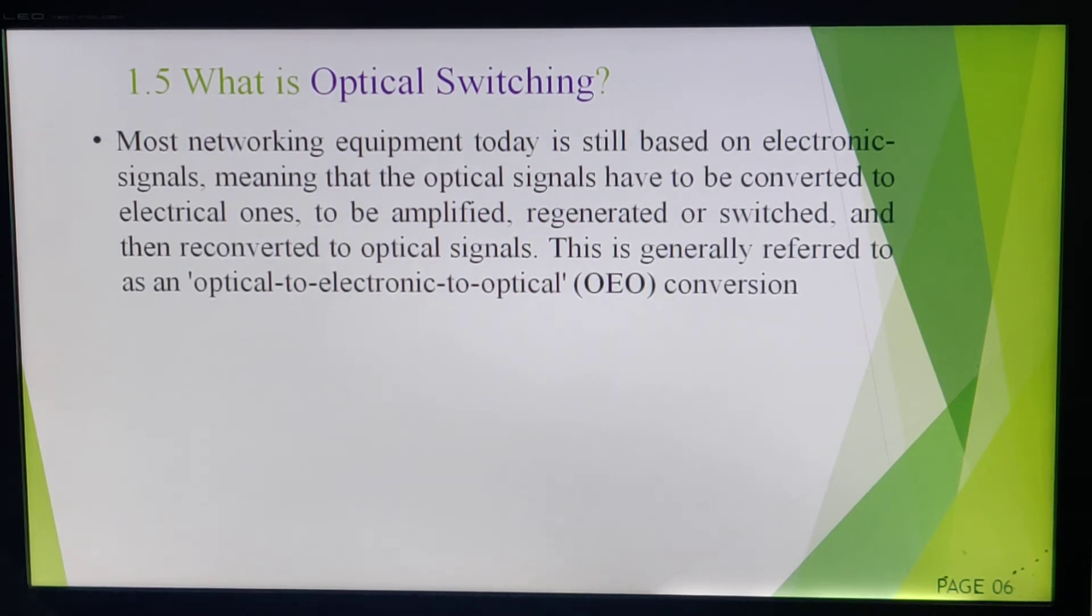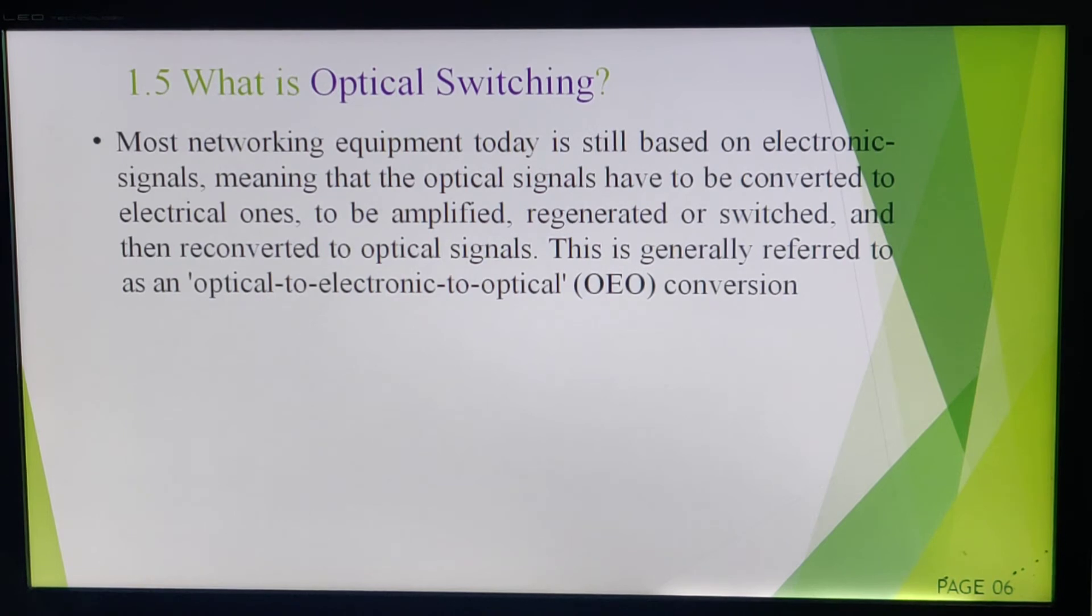So optical to electronic—what we will do is our device will first convert that optical signal into electronic signal. Then again at the receiving side, I will transmit that electronic signal. Receiver will receive that electronic signal, and now at the receiver side, I will again convert that electronic signal into optical for the transmission. At the reception side, I will receive optical signal and that signal I can use. So that is known as OEO conversion.